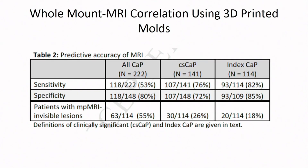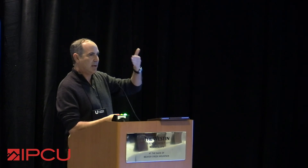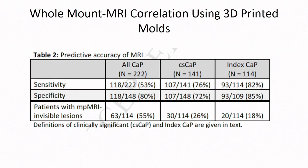A subsequent study used 3D molds so we could really match the actual MRI section to the prostate section on whole mount. We found basically the same results: sensitivity of MRI for detection of the index cancer was 80%, for clinically significant cancer 76%, and for all cancers 53% — essentially replicating the publication from 2014.